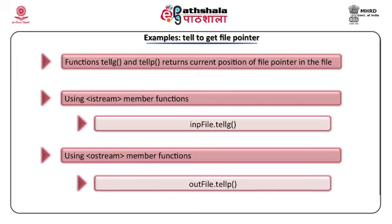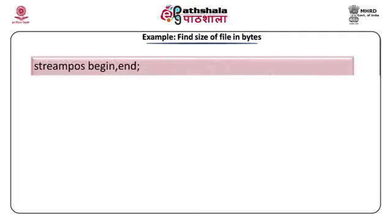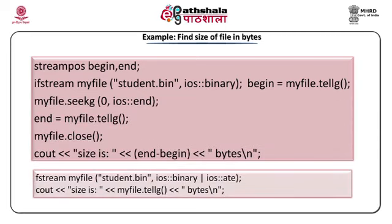Let us see the use of seekg and tellg. Suppose I want to find the size of a file in bytes: I open the file, use tellg() to get the beginning position, move the pointer to the end of the file using seekg(0, ios::end), then get the file pointer again using tellg(), and the difference between the ending and beginning positions gives the file size. Another option is to open the file by placing the pointer at the end using ios::ate and simply call tellg().